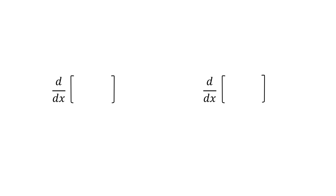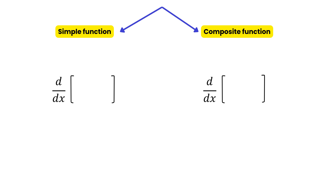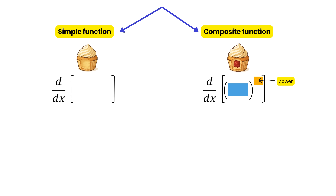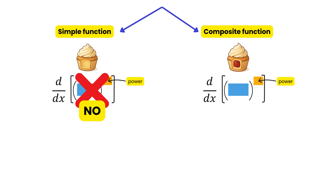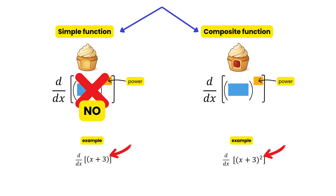So what's the difference between a composite and a simple function, and what does that have to do with a cupcake? Spotting the difference is actually really easy: a composite function will have a bracket raised to some power — in simple functions you'll never see a bracket raised to a power. In the first example we see a bracket but there's no power on it, making it a simple function. In the second example we can clearly see a bracket raised to a power, and that makes it a composite function.